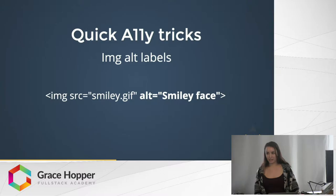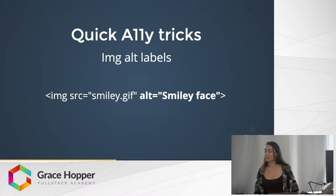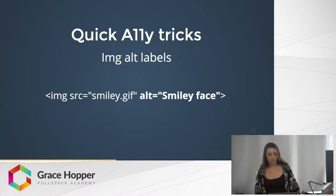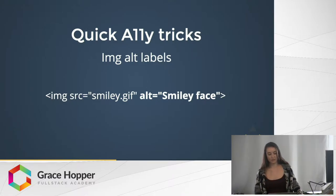The next tip is alt labels. Including an alt tag with a short description of your image is really important. If the image is purely for aesthetic purposes, like a background, include it in your CSS rather than the HTML — that way the screen reader won't have access to it and will skip over it. And if you have to include your image in your HTML, use an alt tag but leave it an empty string. That's convention, so your screen reader will skip it.